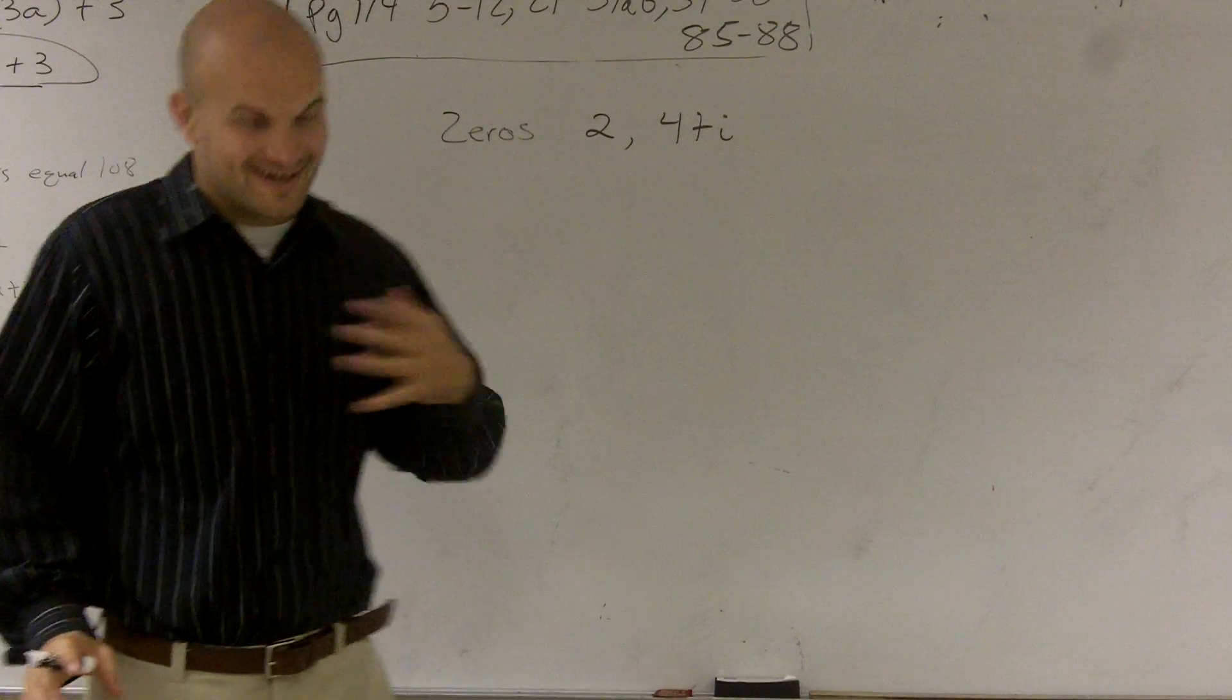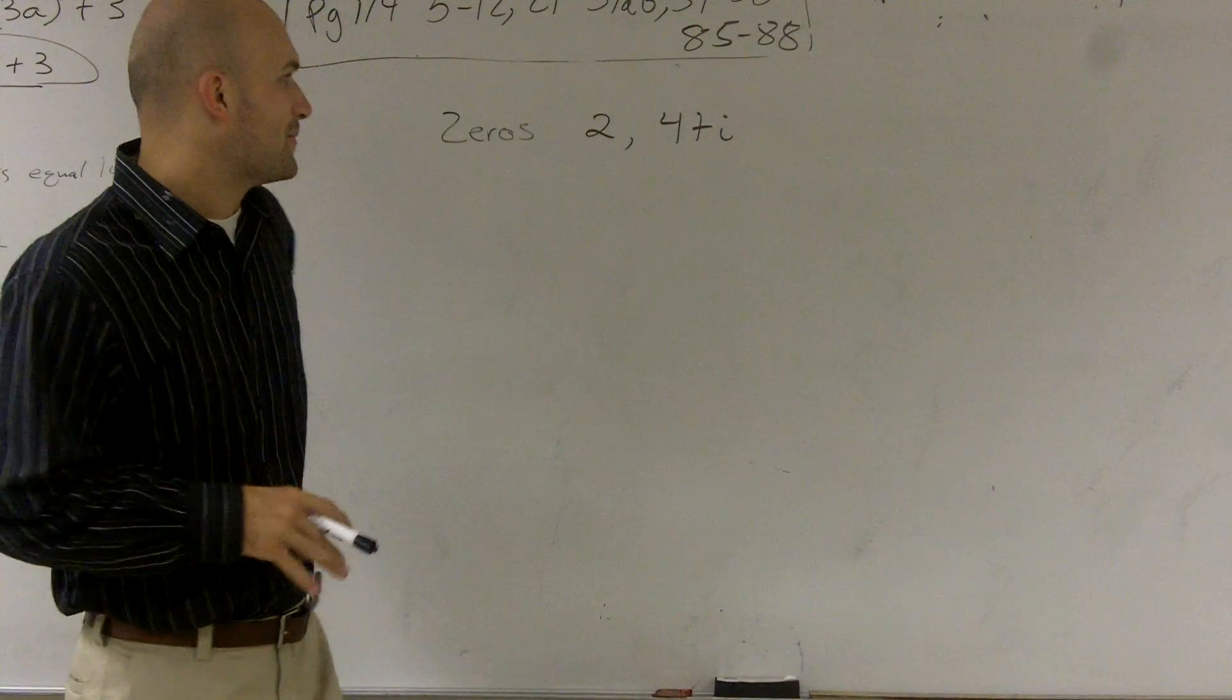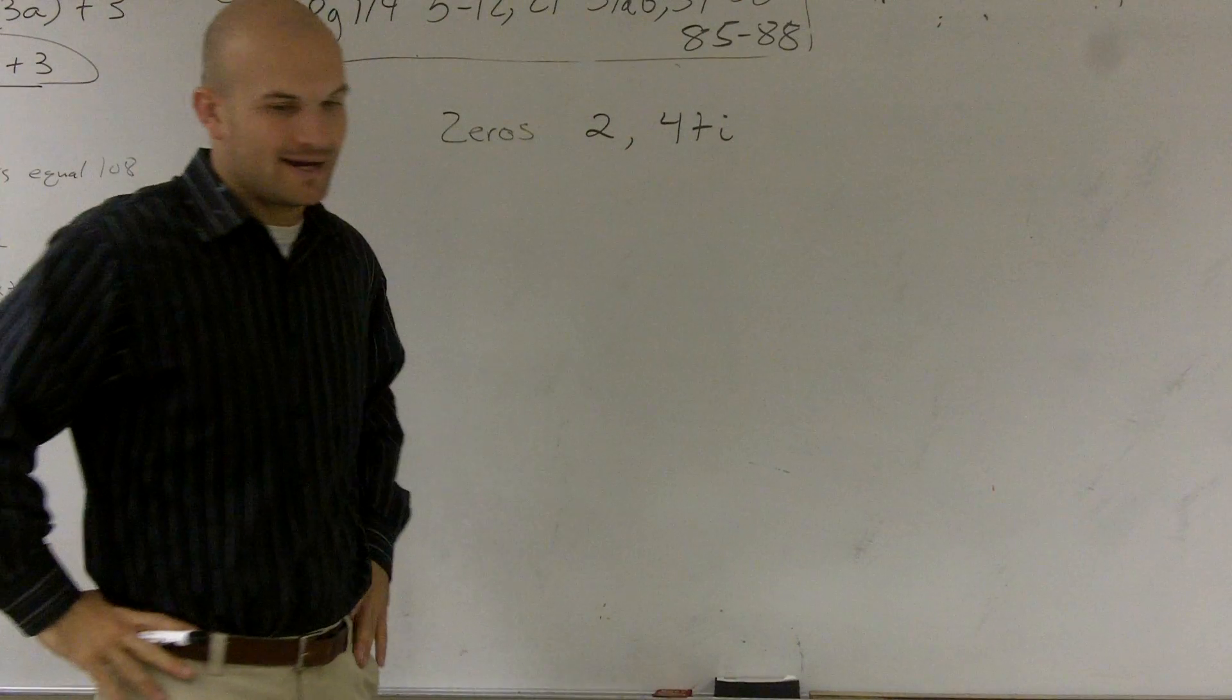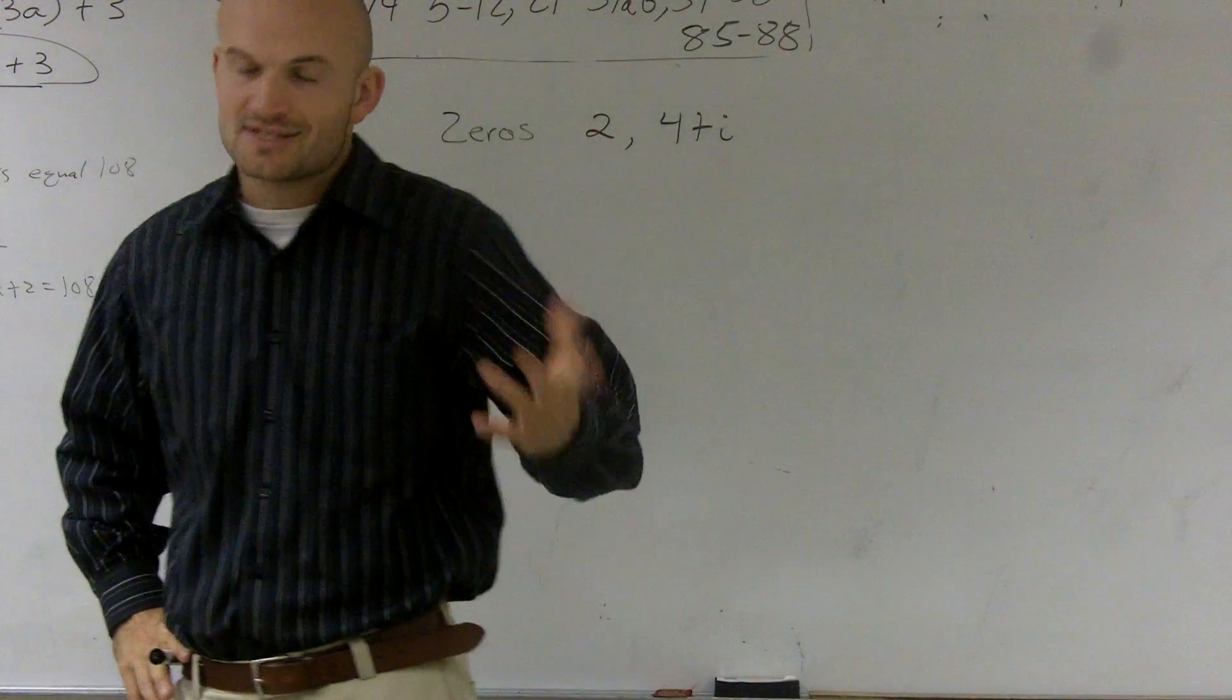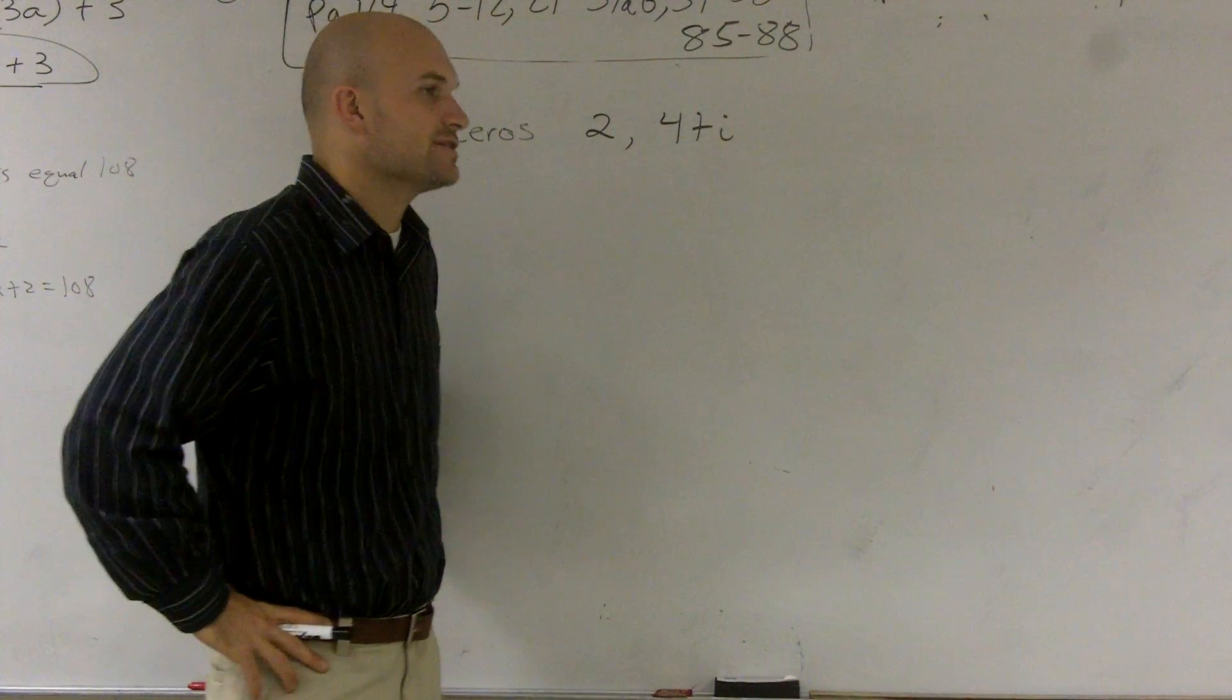Alright, given this equation - I'm sorry, given these zeros, what we have is 2 and 4+i. Now, what they want us to do is find a polynomial with those given zeros.